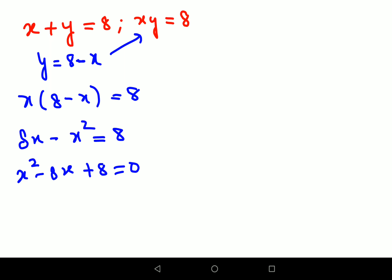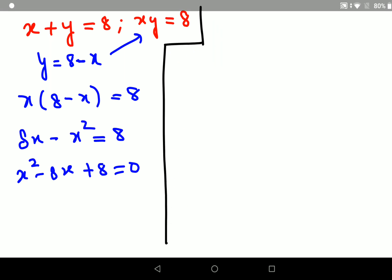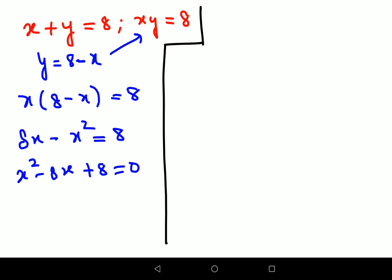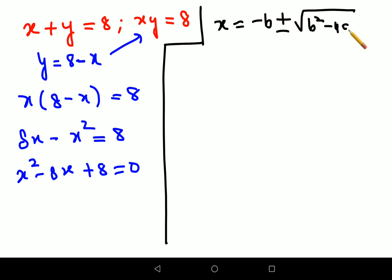I'll try to keep x squared as positive: x squared minus 8x plus 8 equals 0. Now this is a quadratic which cannot be factorized further. When you have to factorize a quadratic that cannot be directly factorized, we use the quadratic formula: x equals minus b plus or minus root of b squared minus 4ac, all upon 2a.